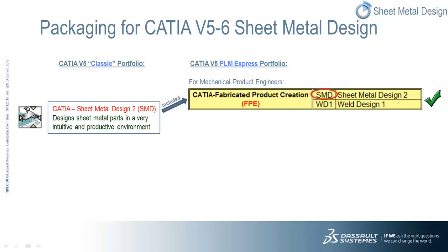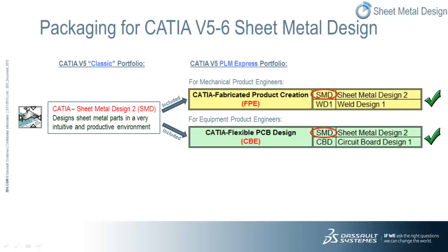FPE includes both CATIA Sheet Metal Design and CATIA Weld Design. The third option is to buy CATIA Flexible PCB Design, or CBE, within the CATIA V5 PLM Express portfolio as an add-on or shareable product. In this manner it can be added to any existing CATIA V5 PLM Express CAT configuration or shared across multiple CAT configurations. CBE includes both CATIA Sheet Metal Design and CATIA Circuit Board Design.